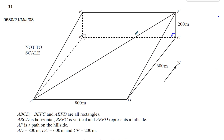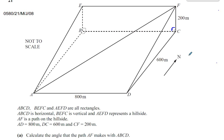AF is a path on the hillside going up the hill from A up to F. AD equals 800 meters, DC equals 600 meters, and CF is 200 meters. We are asked to calculate the angle that the path AF makes with plane ABCD - essentially finding the angle between a line and a plane.